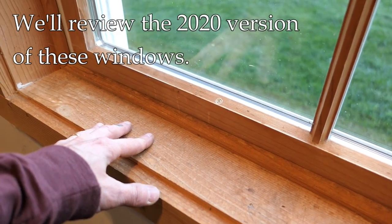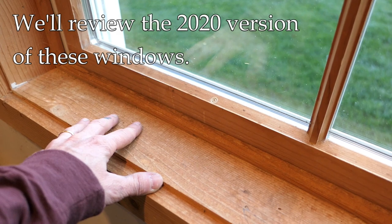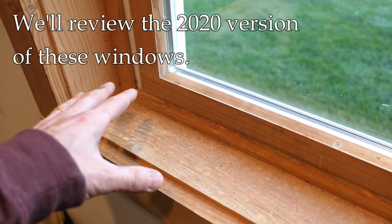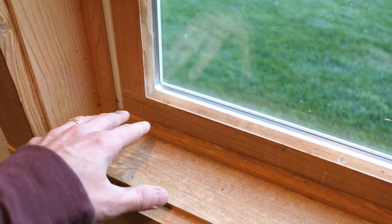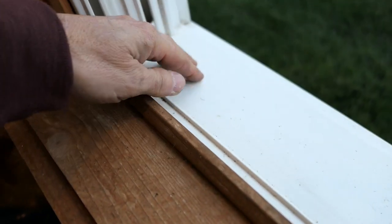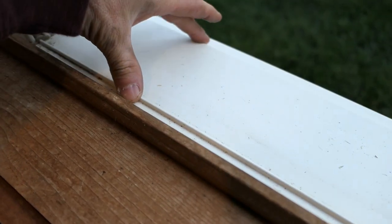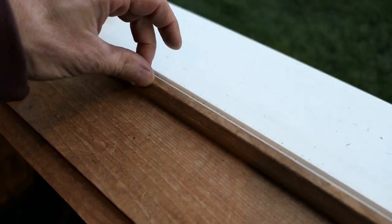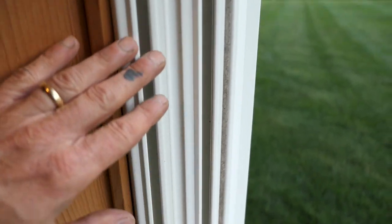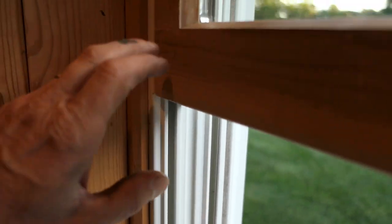These are vinyl clad windows on the outside. On the inside they're wood. In this video I'm going to show you the 2020 version of this and all the features, a complete review. But I wanted to show you what the older windows look like because they are a little bit different. There have been some changes.